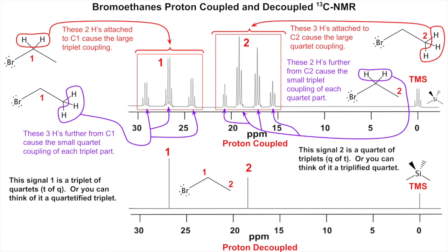So signal two is a quartet of triplets — quartet one, two, three, four, and each is a triplet. You can also think of it as a 'triplified quartet.'